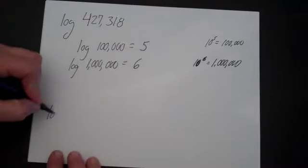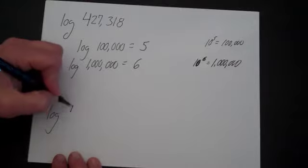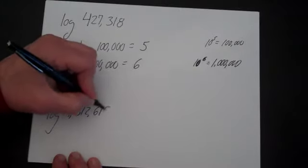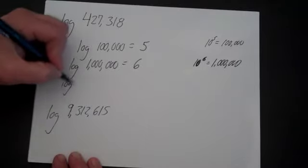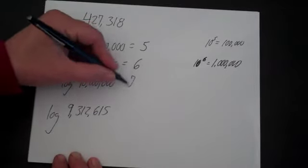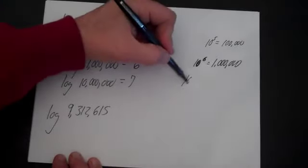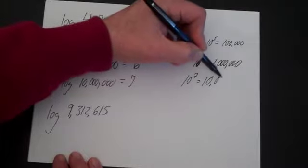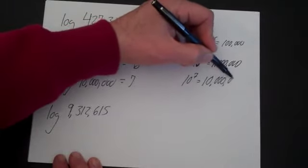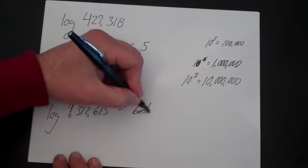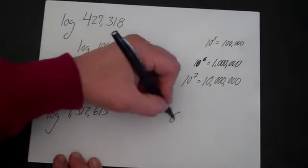If it was log of 9,312,615, I know that the log of 10,000,000 is seven. 10 to the seventh is one with seven zeros—one, two, three, four, five, six, seven. So this is going to be between six and seven.